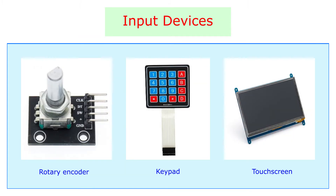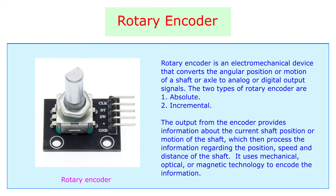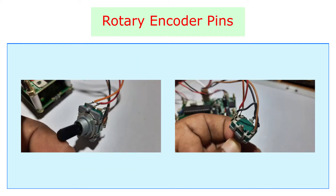3. Input devices. These consist of rotary encoders, keypads, touchscreens, etc. A rotary encoder is an electromechanical device which converts the angular position or motion of a shaft or axle into digital output signals. It uses mechanical, optical or magnetic technology to encode the information. There are two pins on one side which are used for switching and three pins on the other side which are for varying the frequency.